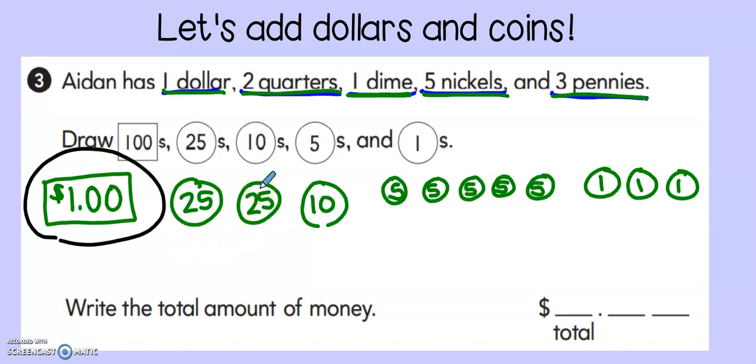I remember that little song I sang in the last lesson about quarters. Twenty-five, fifty, seventy-five, a dollar. So when I count my quarters, I can sing that silly song. Twenty-five, fifty. Now, I'm going to stop because I don't have any more quarters. So right now I have fifty cents. Then I add on a ten. So I go from fifty to sixty. Now I need to count by five. So I have sixty, sixty-five, seventy, seventy-five, eighty, eighty-five.